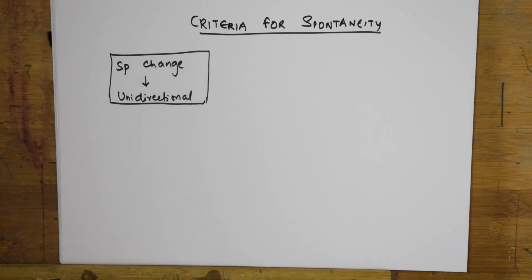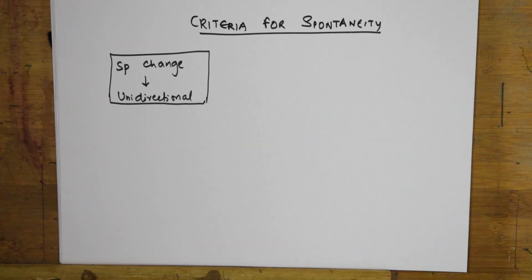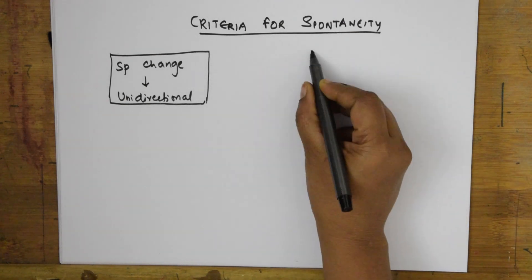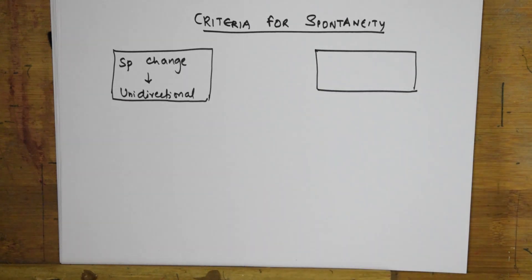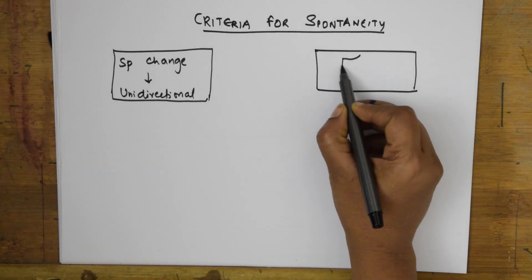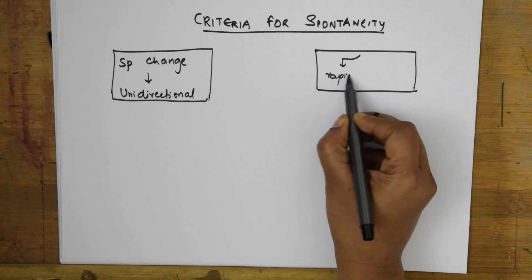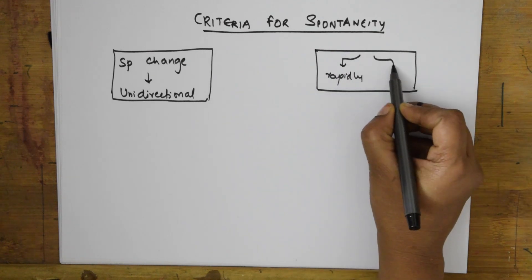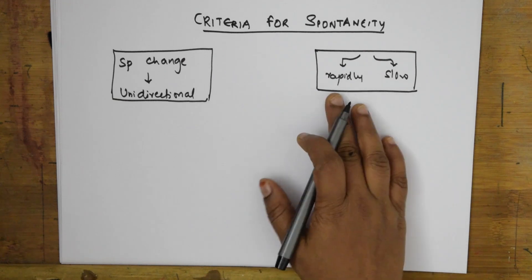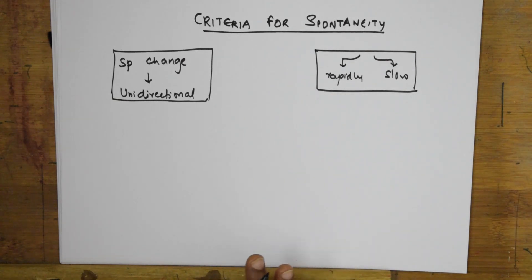The second criteria: time is no factor for a spontaneous change. The reaction can be either rapid or slow. It can undergo step by step, slow or fast. So the spontaneous change can occur rapidly as well as slowly.